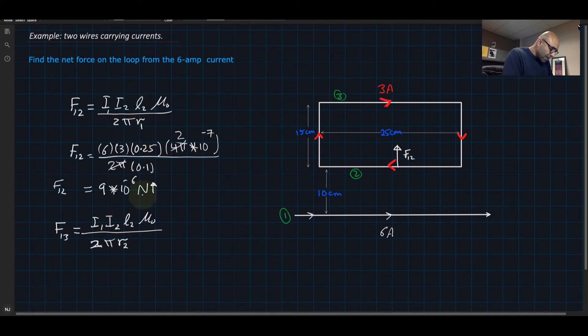Plugging in the same numbers for everything except for R2: 6 times 3 times 0.25 times 4 pi times 10 to the minus 7, divided by 2 pi. Instead of 0.1, this distance is 0.1 plus 0.1 plus 0.15, which is 0.25. This force equals 3.6 times 10 to the minus 6 newtons.